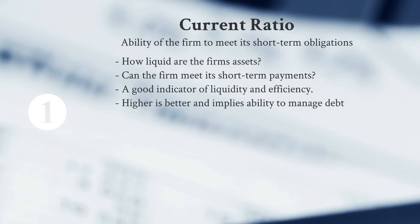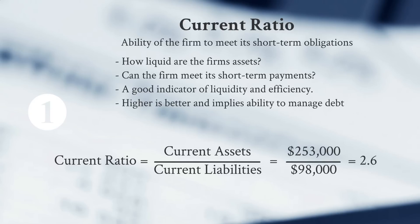The Current Ratio doesn't tell us much about overall long-term debt structure, which could be huge or insignificant. It's calculated as current assets divided by current liabilities — both due or expected to convert to cash within one year. In this case, $253,000 divided by $98,000 means the firm could cover its liabilities about 2.6 times.